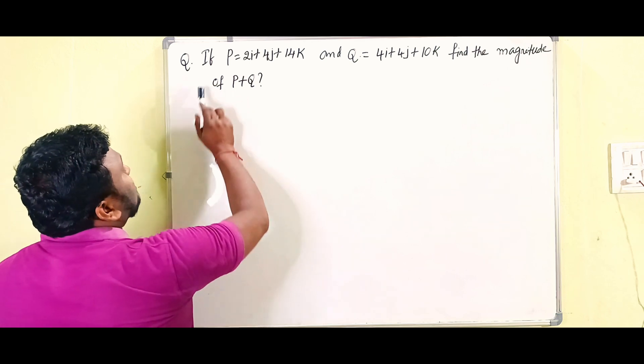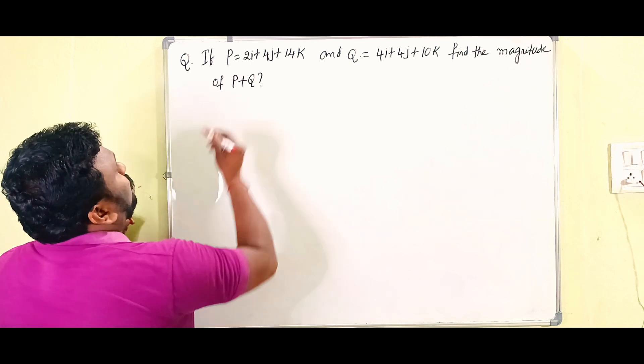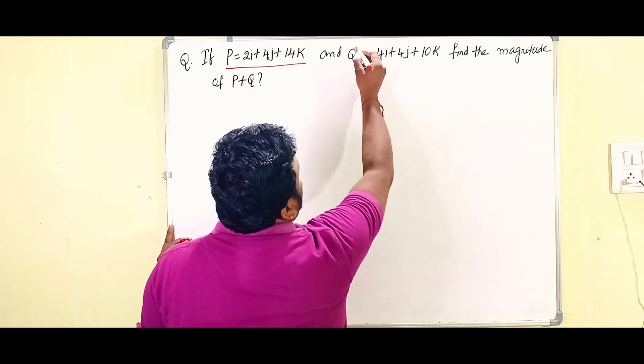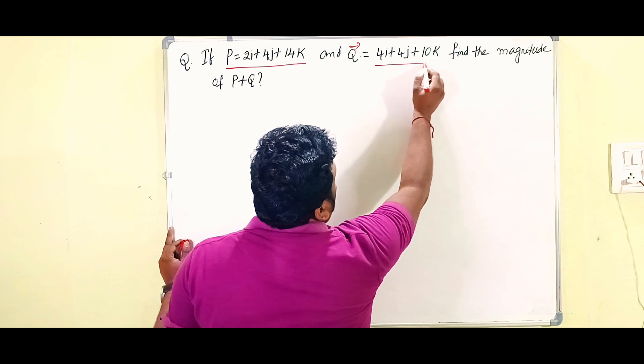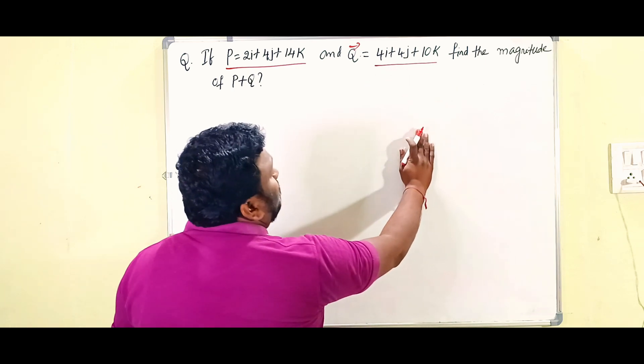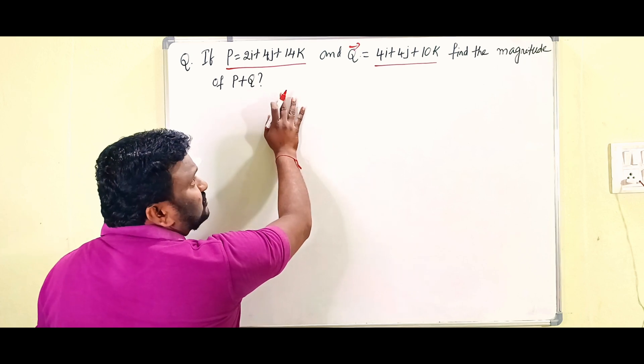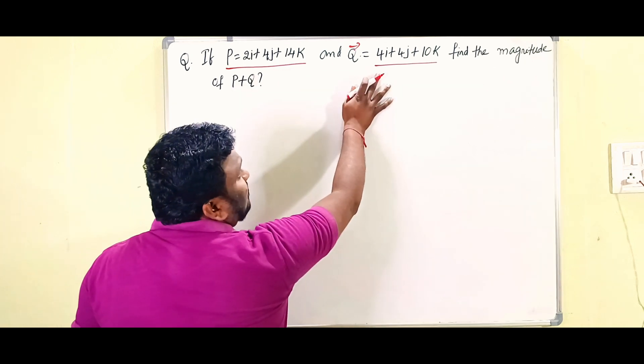If P is equals to 2i plus 4j plus 14k and vector Q is equals to 4i plus 4j plus 10k, find the magnitude of P plus Q. That is the question. It was given two vectors and what you have to find out is the magnitude of those two vectors.